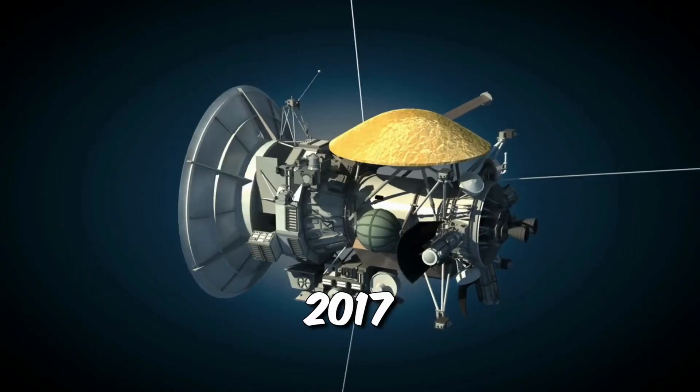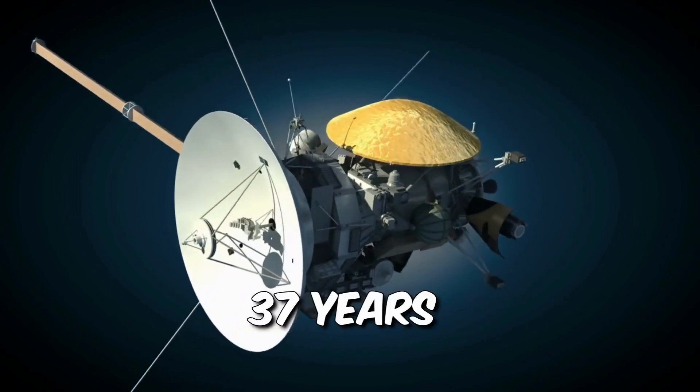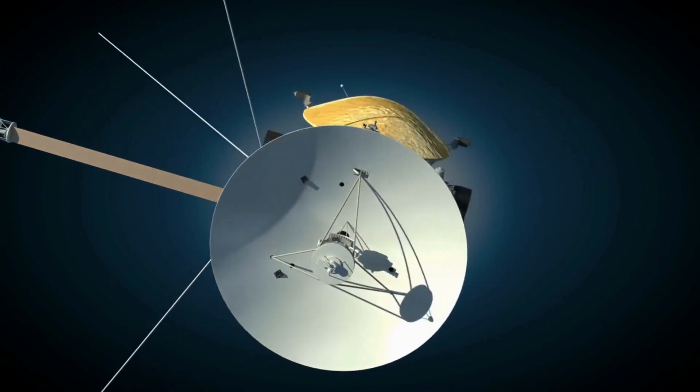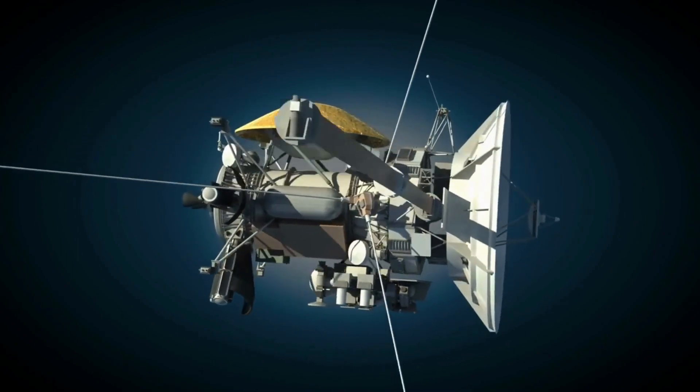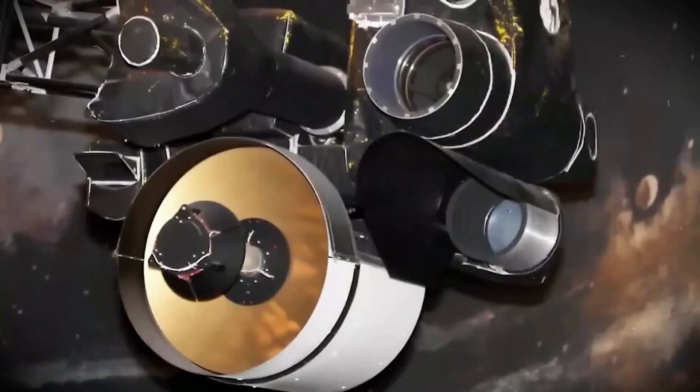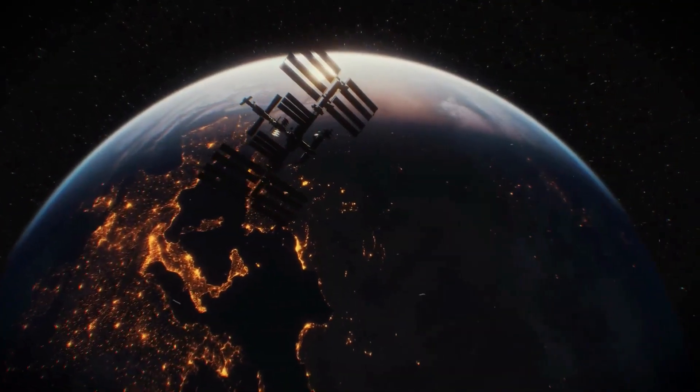In 2017, Voyager 1 even had to activate secondary thrusters after 37 years of inactivity, like finding a secret stash of turbo boost in your old car. These space probes are like our cosmic trailblazers, and they're still going strong, thanks to ingenious engineering and power-saving tactics.